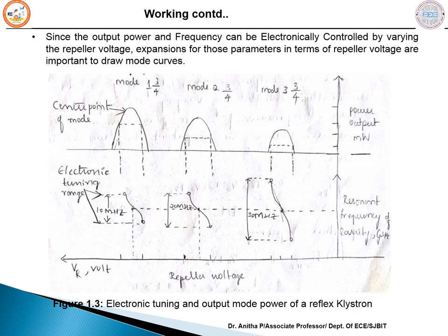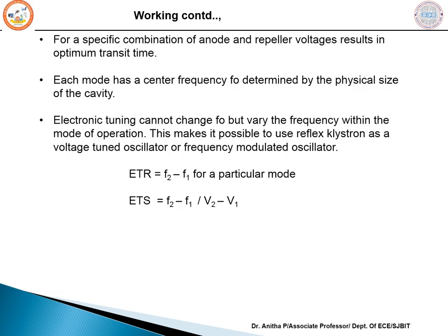The power output and frequency can be controlled electronically by varying the repeller voltage. The electronic tuning range (ETR) is defined as ETR = F₂ − F₁ for a particular mode. The electronic tuning sensitivity is the ratio of change in frequency to change in repeller voltage (ΔF/ΔVr). These parameters are important for drawing mode curves and are calculated using empirical formulas.